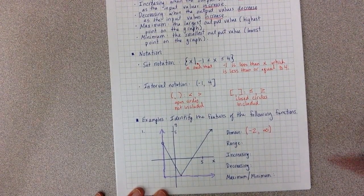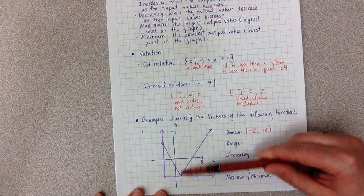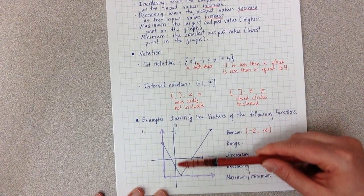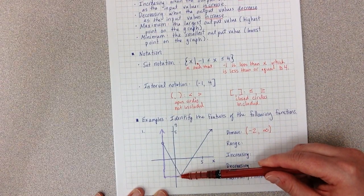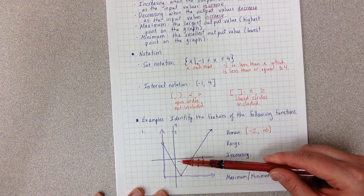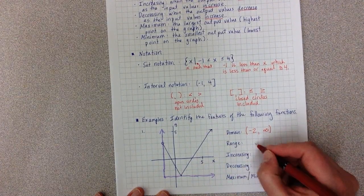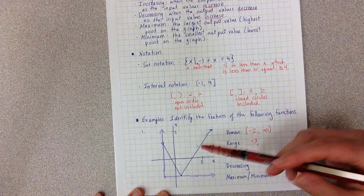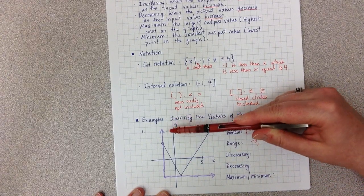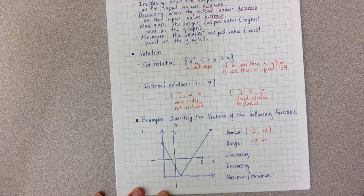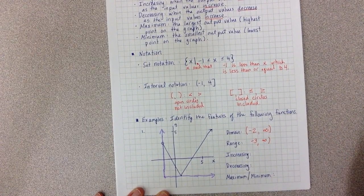My range are my y values. So I'm looking at my y-axis. And just like the x values, the domain, I'm looking at smallest to largest. So my smallest y value is negative 3. And my largest, we keep going up and up and up. So it's infinity.